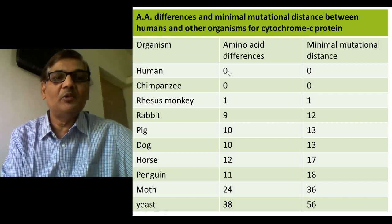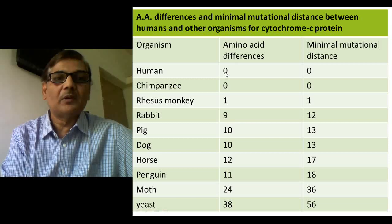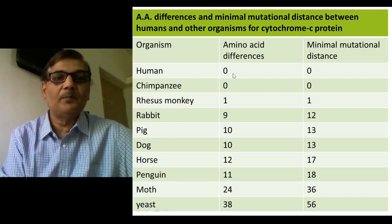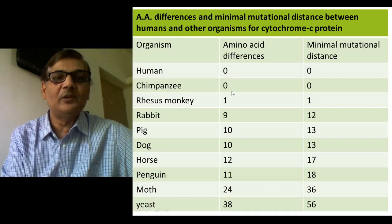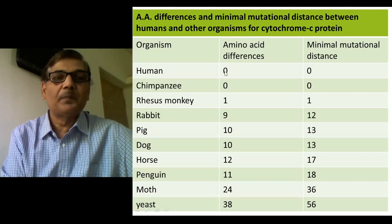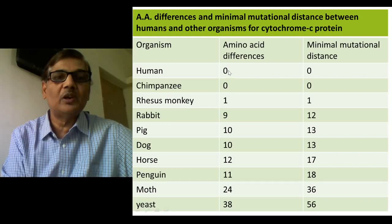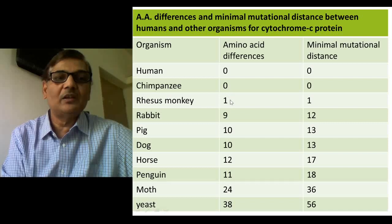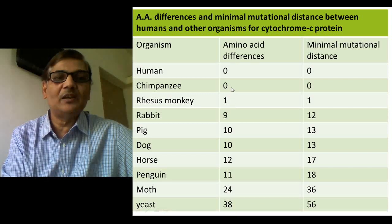When analyzing the amino acid sequence, comparing the first amino acid of ours with other animals and plants shown in this table, we find that not a single amino acid difference exists between humans and chimpanzee — zero difference. If we consider a rhesus monkey, a single amino acid difference exists. This shows that a rhesus monkey is evolutionarily not as close to humans as the chimpanzee.